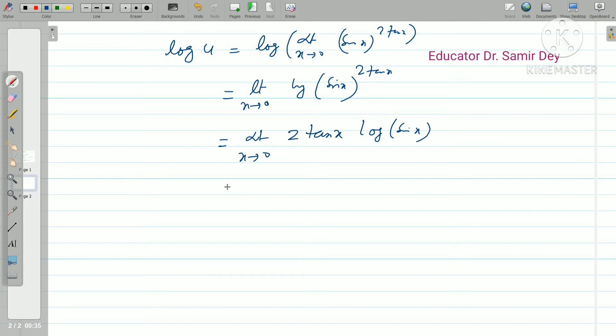What is our target? To represent this as 0 by 0 or infinity by infinity. So here you may write limit x tends to 0, that is log of sin x by cot x. Basically what you have: infinity by infinity, an indeterminate form. So if you have infinity by infinity form, then you should apply L'Hôpital's rule.